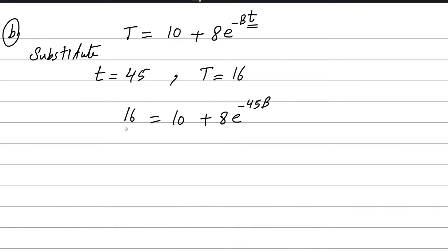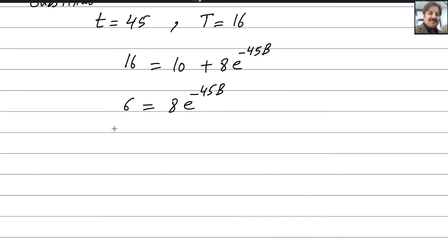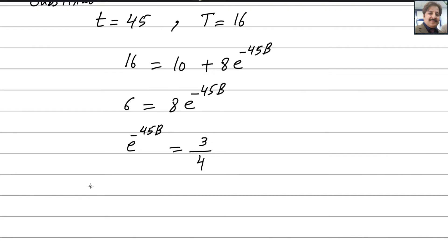Take 10 to the other side: it becomes 6 equals 8 e to the power minus 45B. Then 8 divides to the other side and we can write e to the power minus 45B equals 6 divided by 8, which in simplest form is 3 over 4. To get rid of the exponent, we take the natural log of both sides: ln(e to the power minus 45B) equals ln(3 over 4).